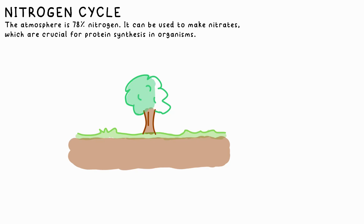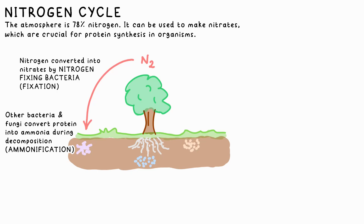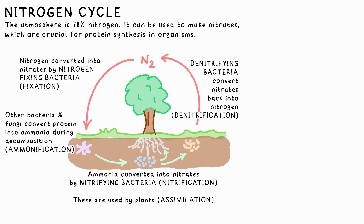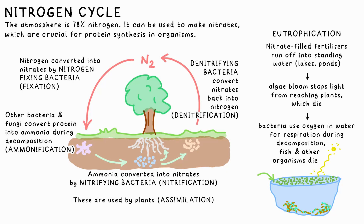Nitrogen also follows a cycle. Nitrogen gas in the atmosphere, N2, is converted into nitrates by nitrogen-fixing bacteria found in soil or root nodules of some plants. Other bacteria and some fungi convert proteins into ammonia during decomposition of urine, faeces, or dead organisms. This ammonia is converted into nitrates by nitrifying bacteria. Now that we have nitrates, they can enter plants through the roots and can be used by them for growth. Nitrates are turned back into nitrogen gas by denitrifying bacteria. Man-made fertilisers contain nitrates to help crops grow. Of course, if too much is used, water from rain can cause it to run off into ponds and lakes where the water is still. This causes algae on the surface to bloom, making a barrier that stops light from reaching underwater plants. These then die, and respiring bacteria feeding on this dead plant material use up more oxygen in the water, starving fish and other creatures of it, and they die. This is eutrophication.